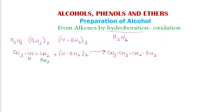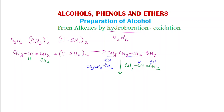This first product will again react with a second molecule of alkene, CH3CH=CH2. What happens here is: one of the two hydrogens attached to boron will be added to one carbon of the new alkene, and the boron with the remaining hydrogen attaches to the other carbon. So the second product is (CH3CH2CH2)2-BH.